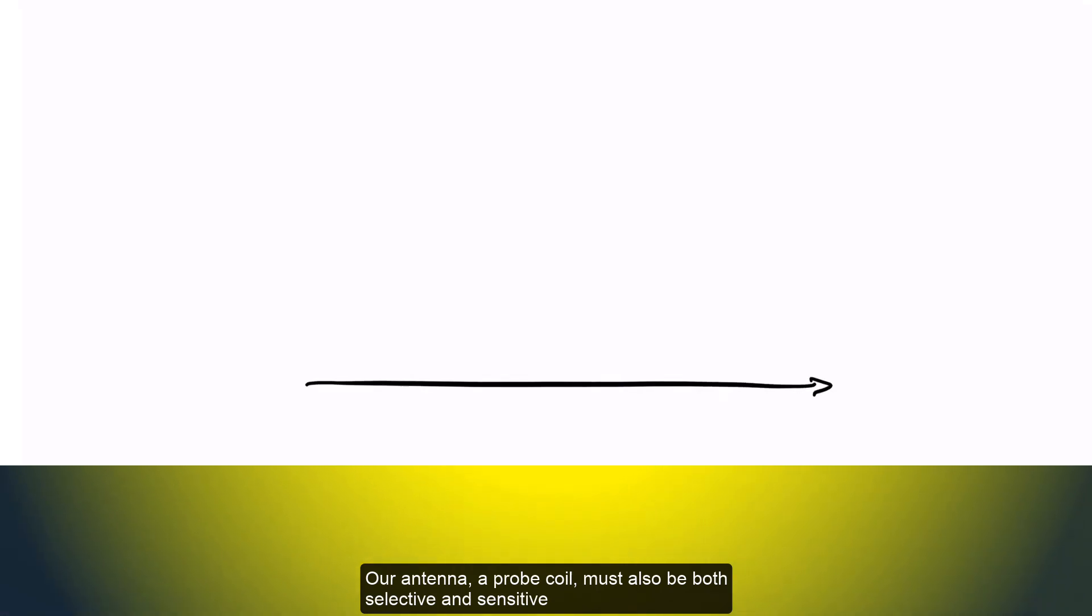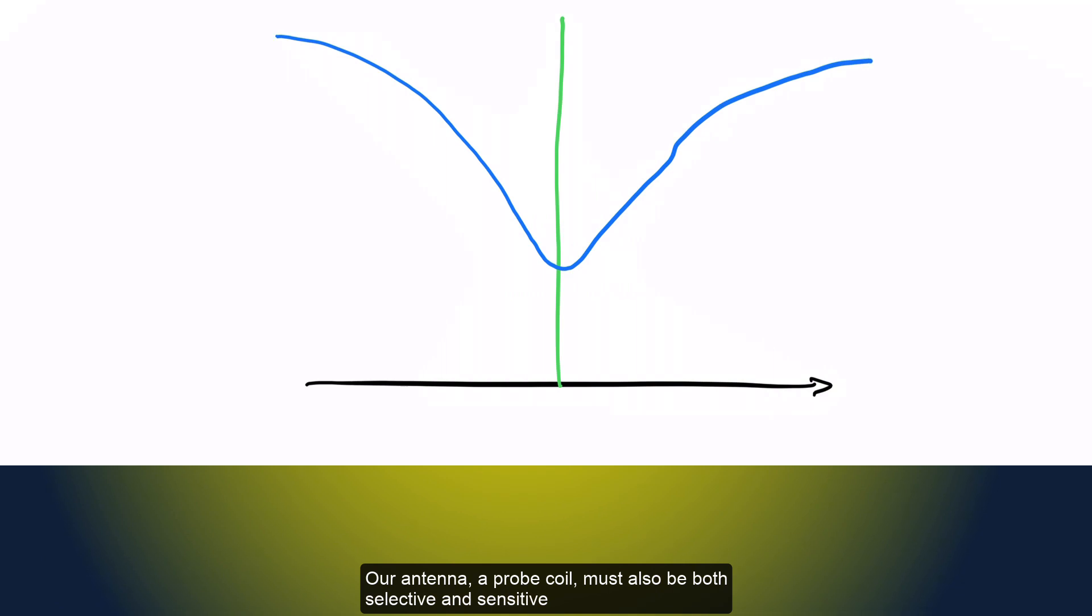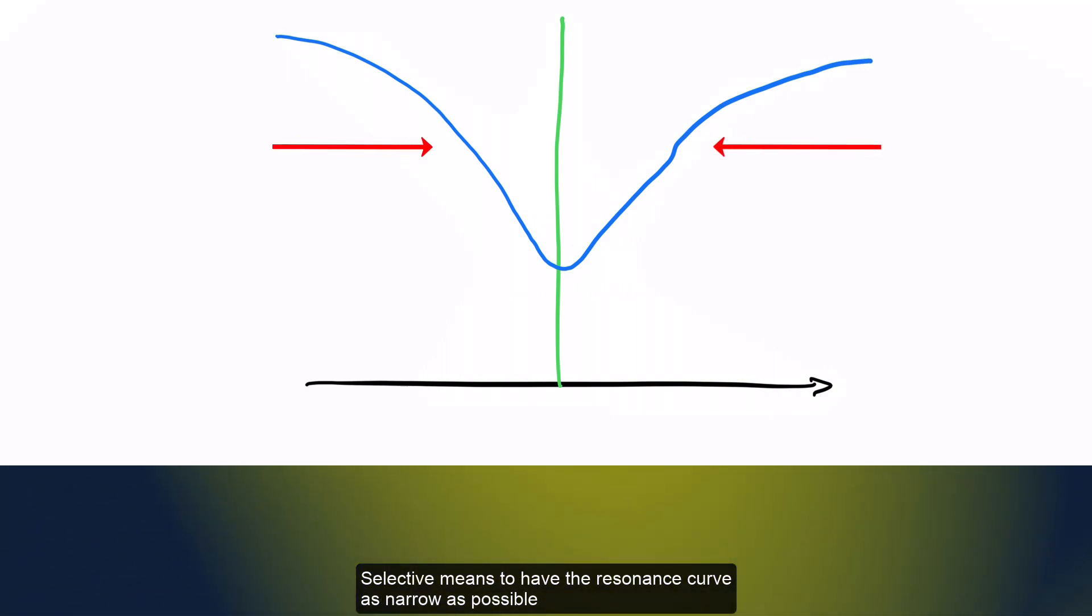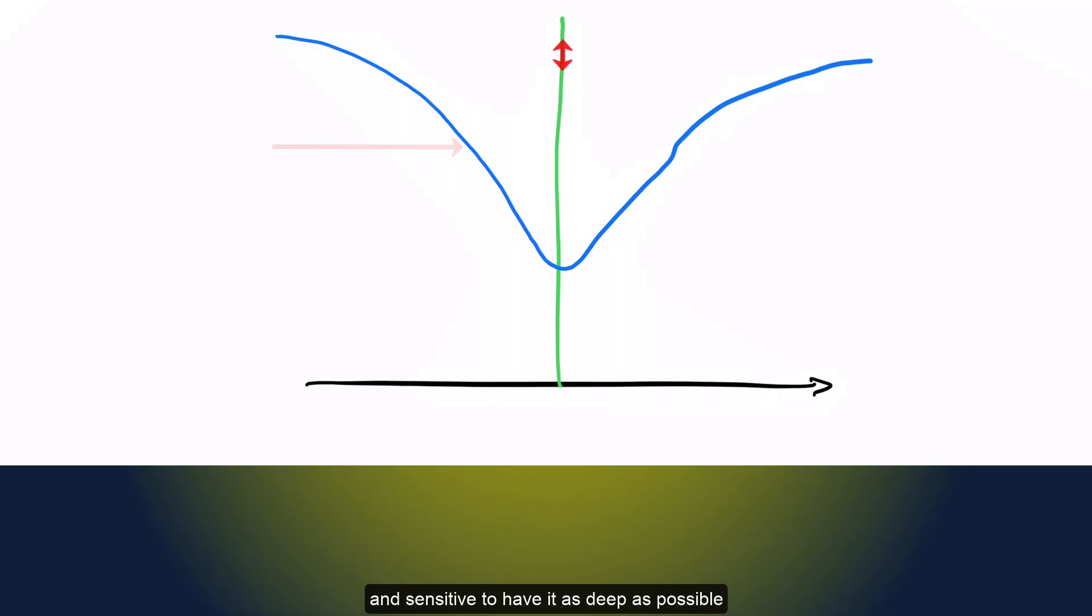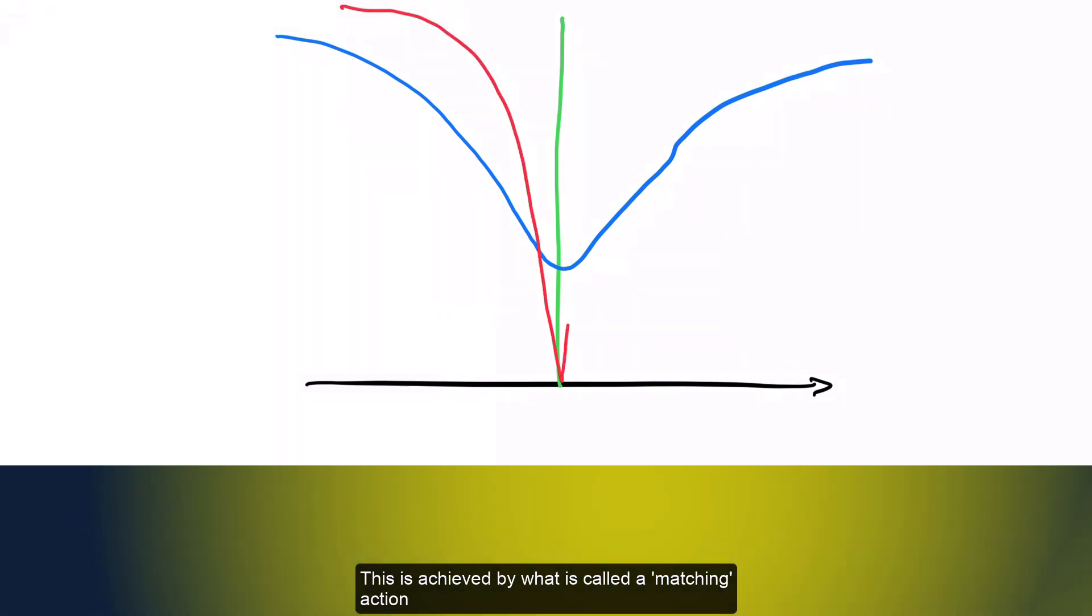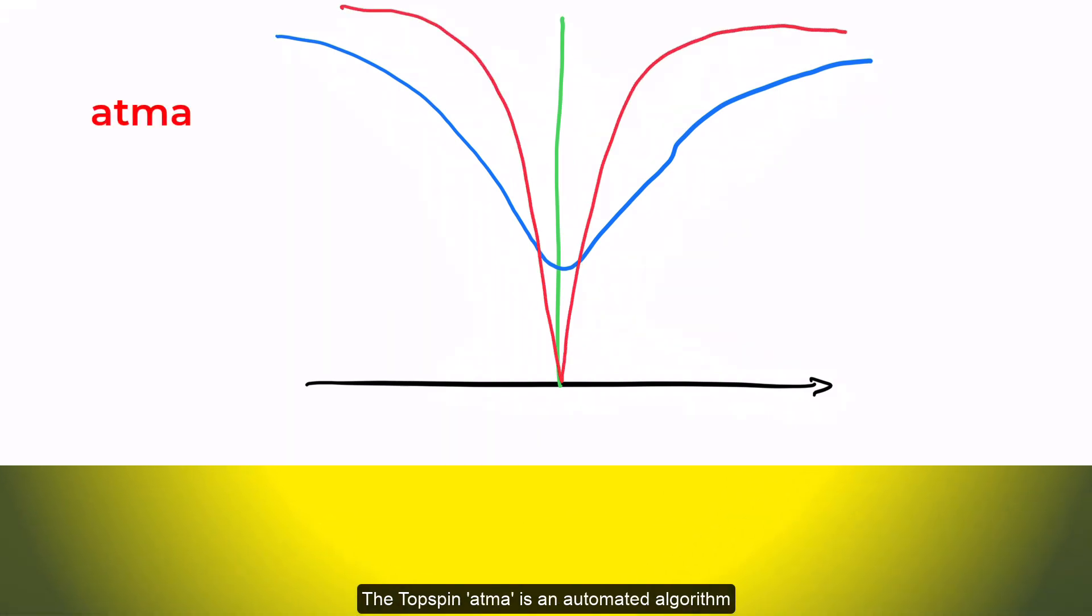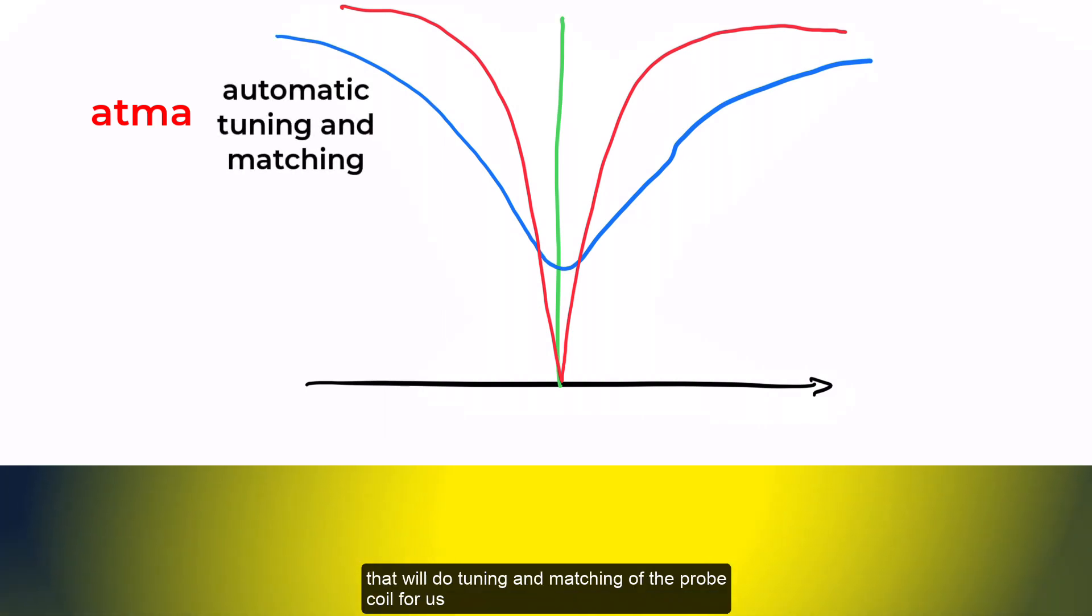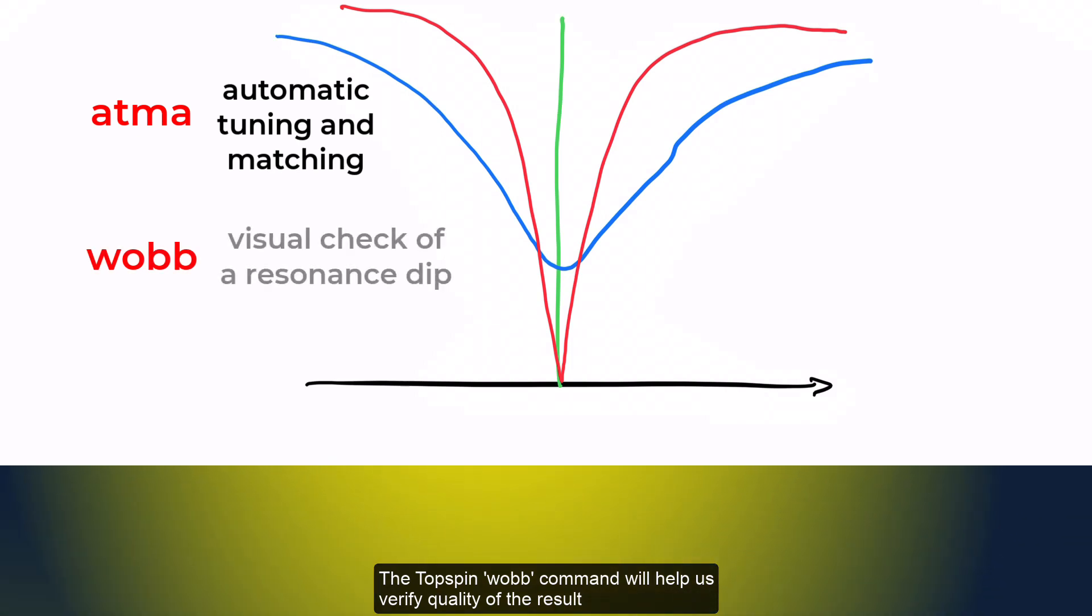Our antenna, a probe coil, must also be both selective and sensitive. Selective means to have the resonance curve as narrow as possible, and sensitive to have it as deep as possible. This is achieved by what is called a matching action. The topspin ATMA command is an automated algorithm that will do tuning and matching of the probe coil for us. The topspin Wob command will help us verify quality of the result.